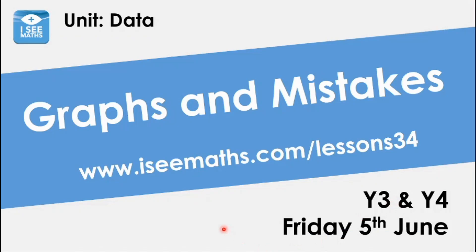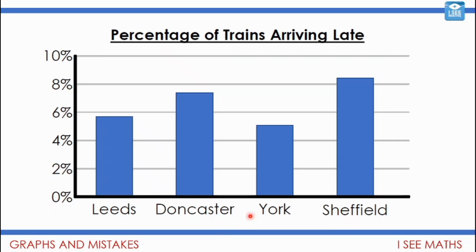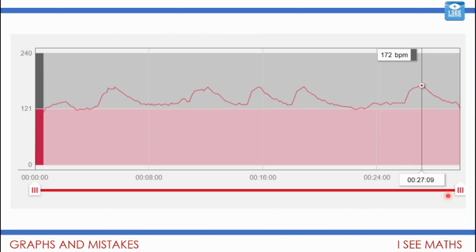Today is called 'Graphs and Mistakes' — I'm really looking forward to sharing someone else's mistake for once! We're also going to do a recap on different types of graphs. We had a look at bar graphs — for example, percentage of trains arriving late. This is a bar graph because we have distinct groups: we're measuring how likely trains were to be late at different stations. It can't be a line graph; it's grouped into bars.